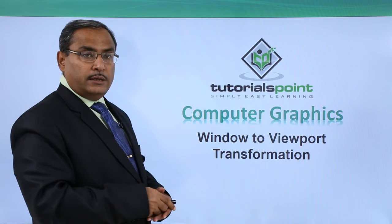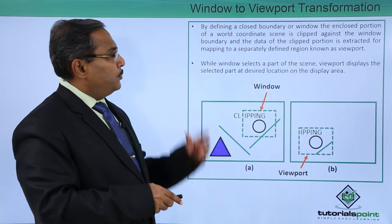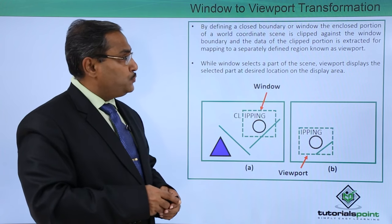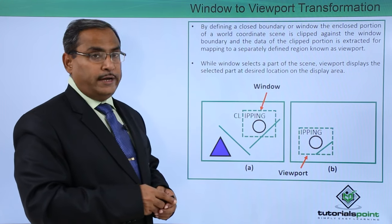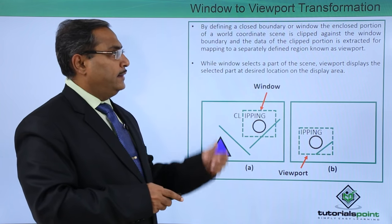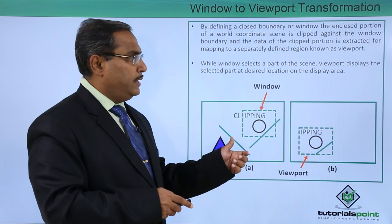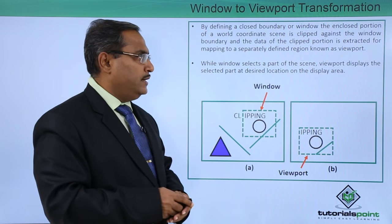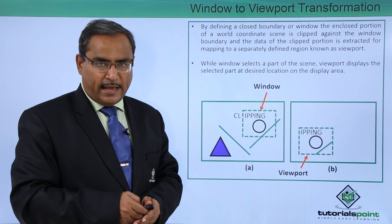Now at first we are going for the respective example. By defining a closed boundary or window, the enclosed portion of a world coordinate scene is clipped against the window boundary and the data of the clipped portion is extracted for mapping to a separately defined region known as a viewport.